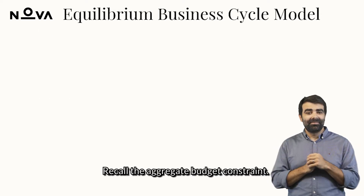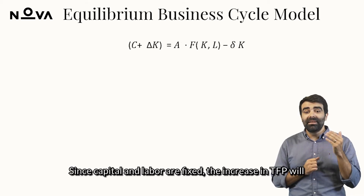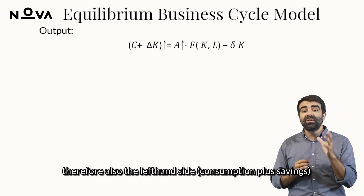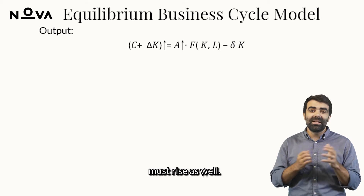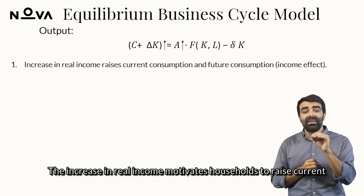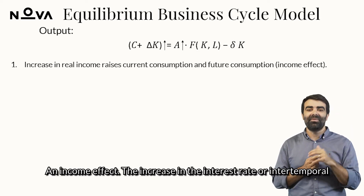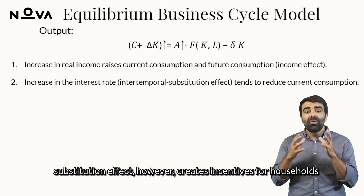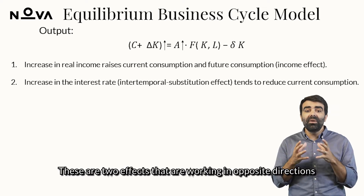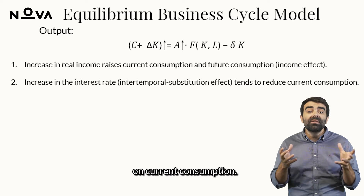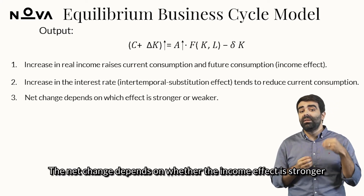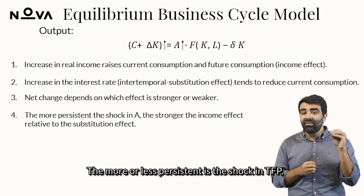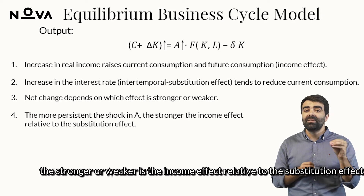What about consumption and investment? Recall the aggregate budget constraint. Since capital and labor are fixed, the increase in TFP will lead to an increase in net income on the right-hand side, and therefore consumption plus savings must rise as well. The increase in real income motivates households to raise current and future consumption — an income effect. However, the increase in the interest rate, or intertemporal substitution effect, creates incentives for households to reduce current consumption. The net change depends on whether the income effect is stronger or weaker than the intertemporal substitution effect.